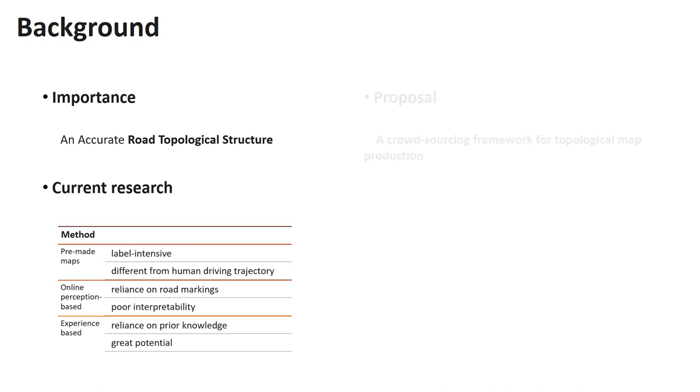In this paper, we proposed a novel crowdsourcing framework for topological map production, which can generate road topology automatically from the traffic flow in intersections.